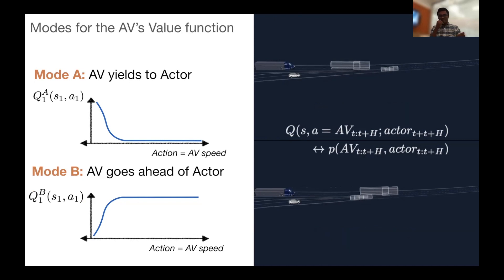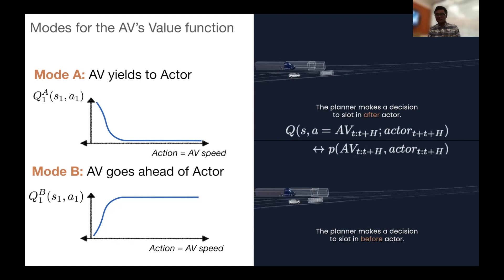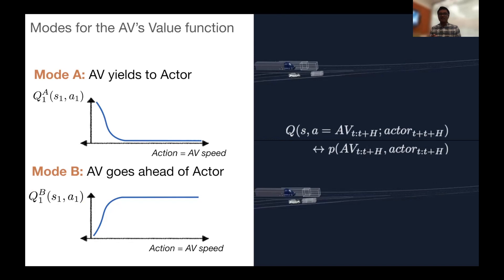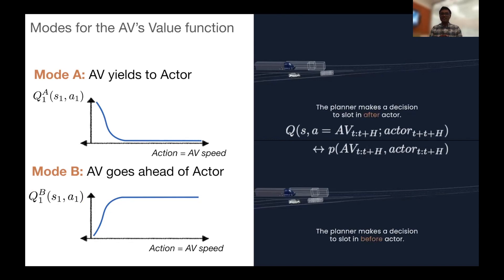Here, we have in the top, we again have mode A, which is the AV yielding to an actor, and this helps us define the utility function. That function itself is a function of the forecast, which I tried to demonstrate here with saying the Q function is related to the joint distribution of both the AV and the actor. So if we condition on the AV trying to yield to the actor first, a discrete bit, we can find the utility function that tells us, as a function of their forecast and our own speed, how good this will be. So if I'm trying to yield to the actor, I want to go slower. If I'm trying to go ahead of the actor in mode B, I want to speed up to convey that intent.